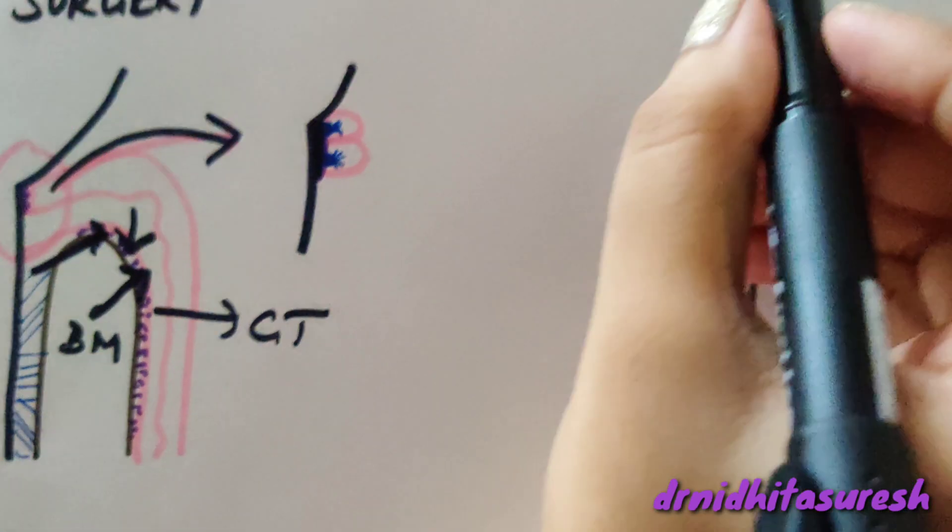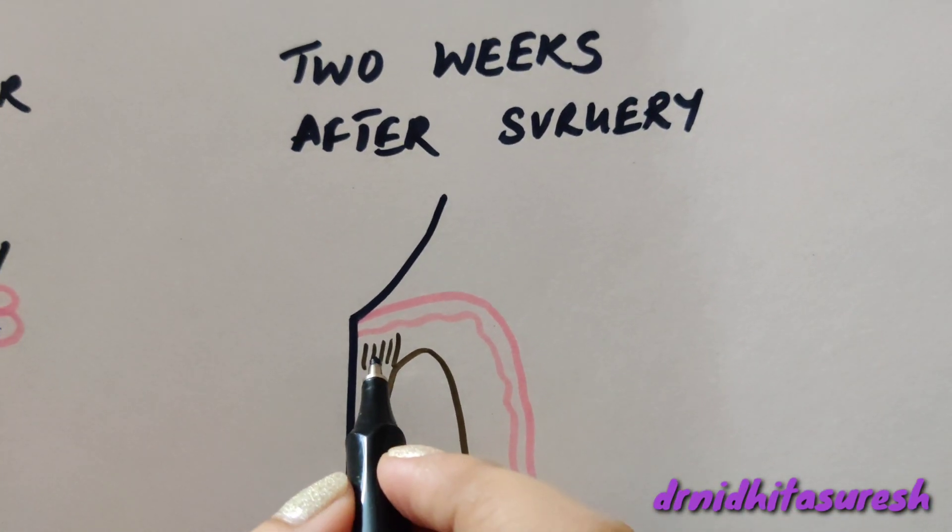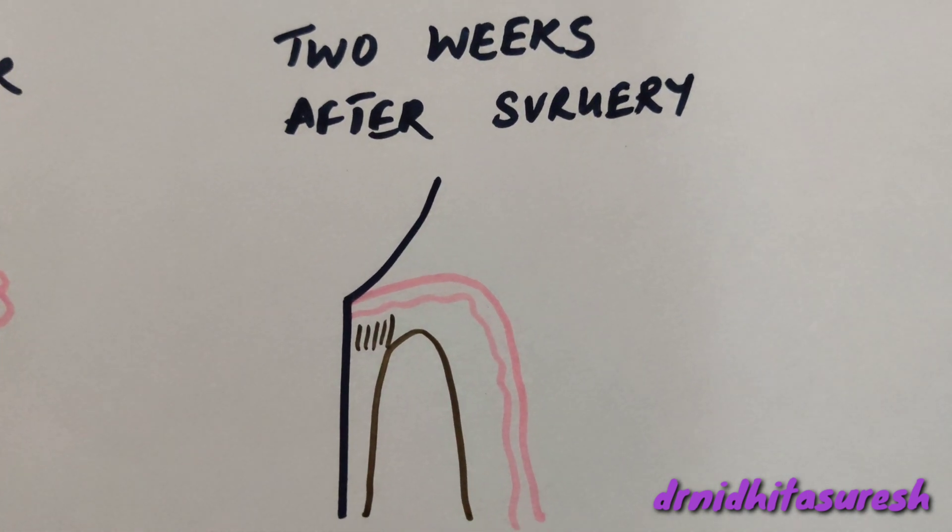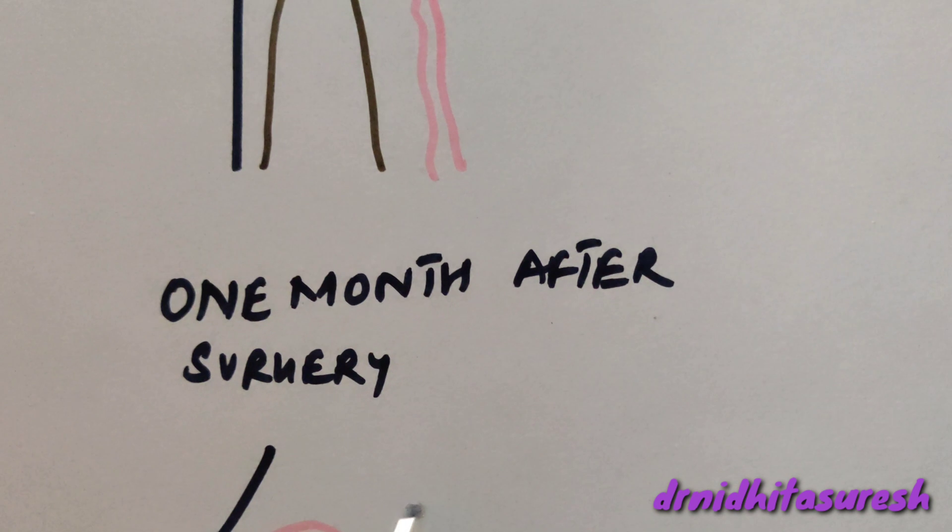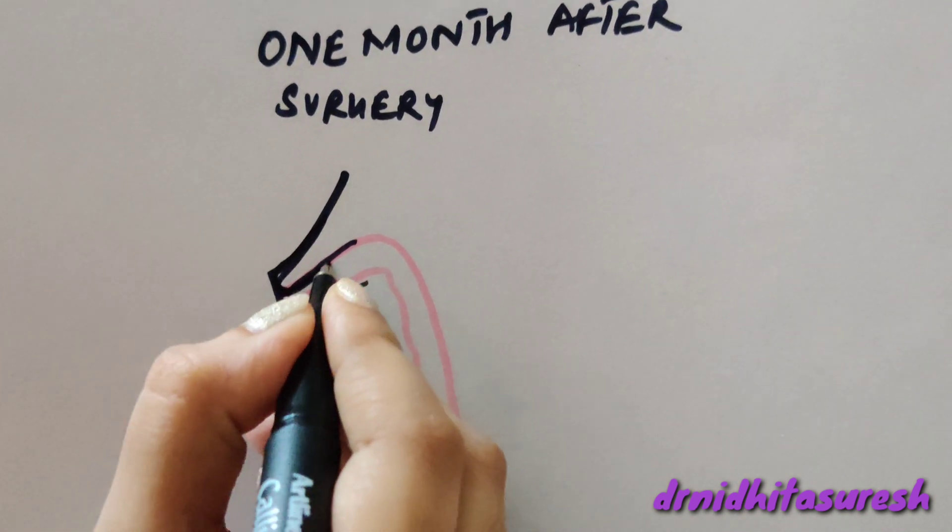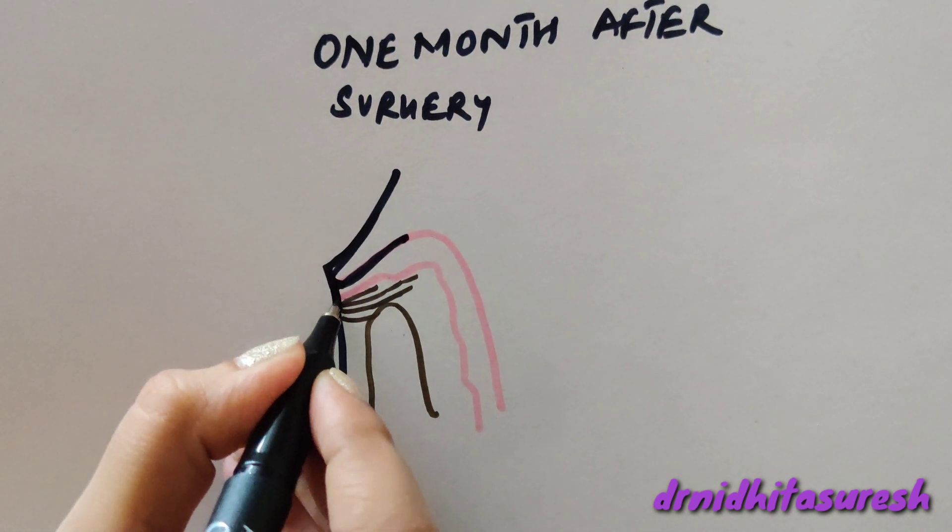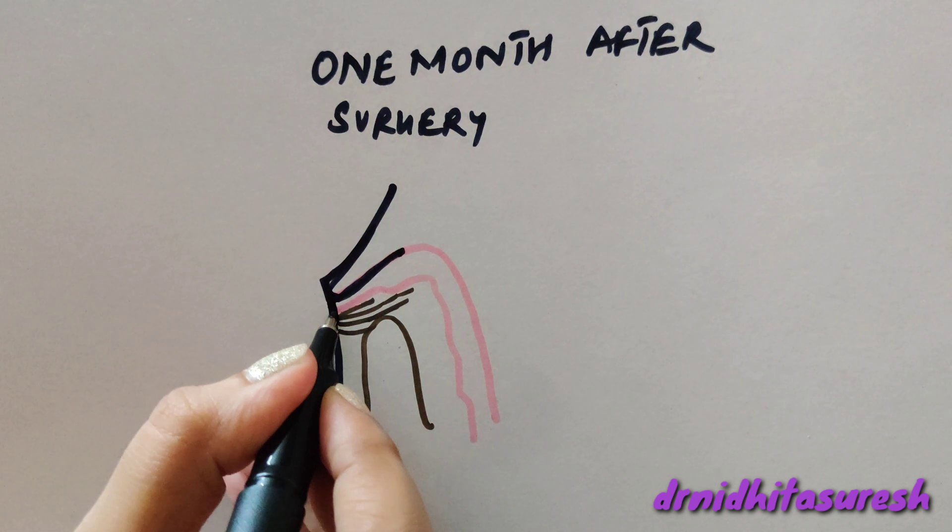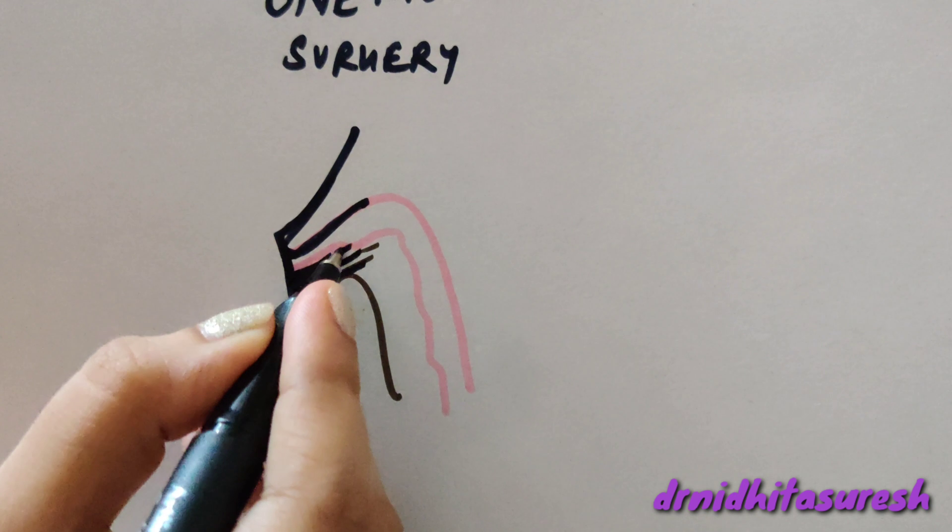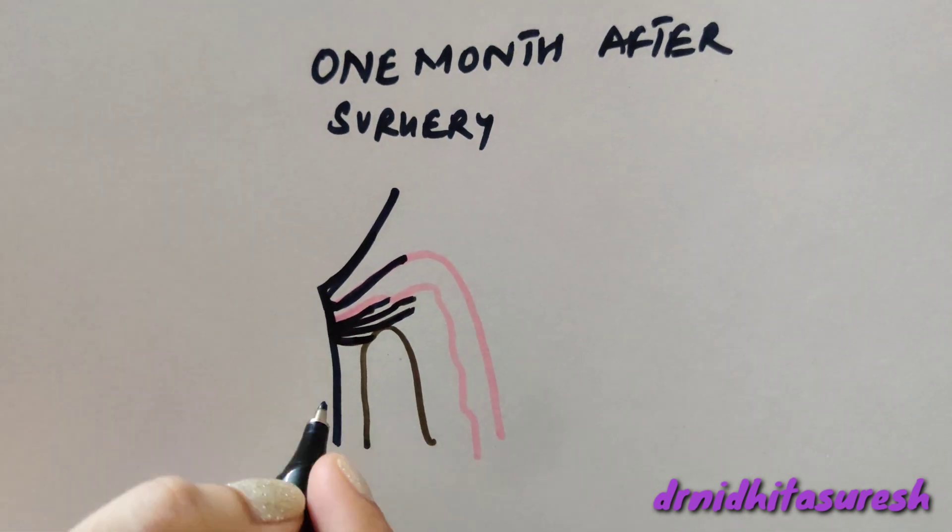Two weeks after surgery, the collagen fibers will start to form but they form parallel to the tooth surface. One month after surgery, a well-defined epithelialized gingival crevice forms, then a good epithelial attachment as well as a functional arrangement of supracrestal fibers start to begin. Thank you.